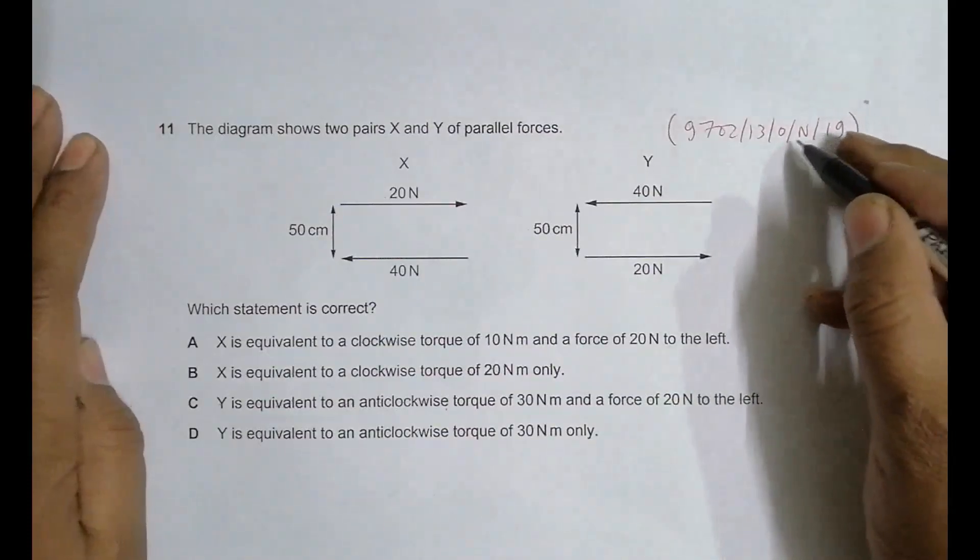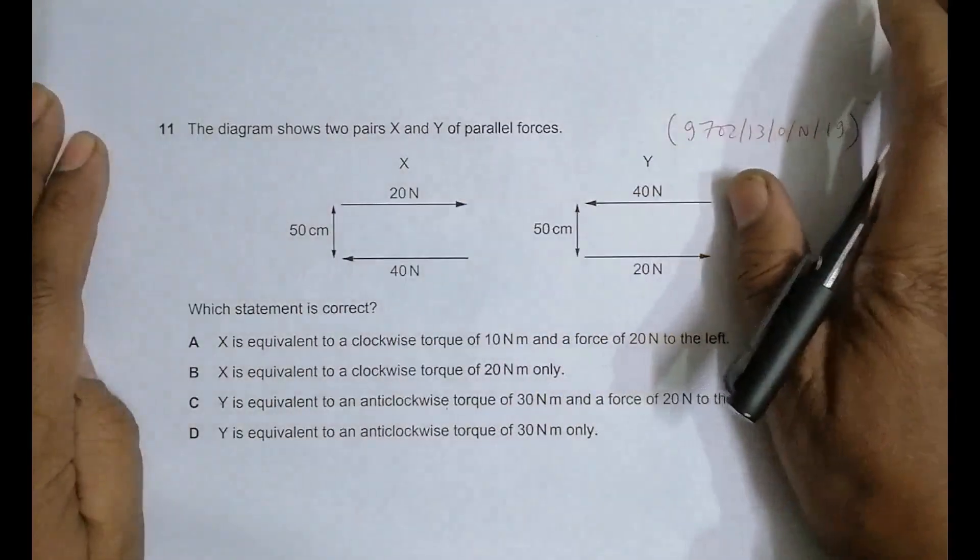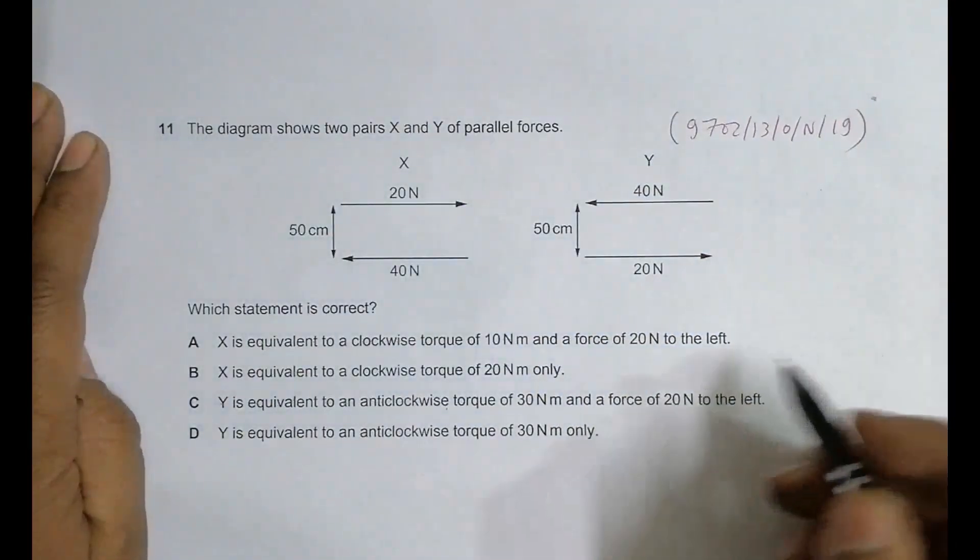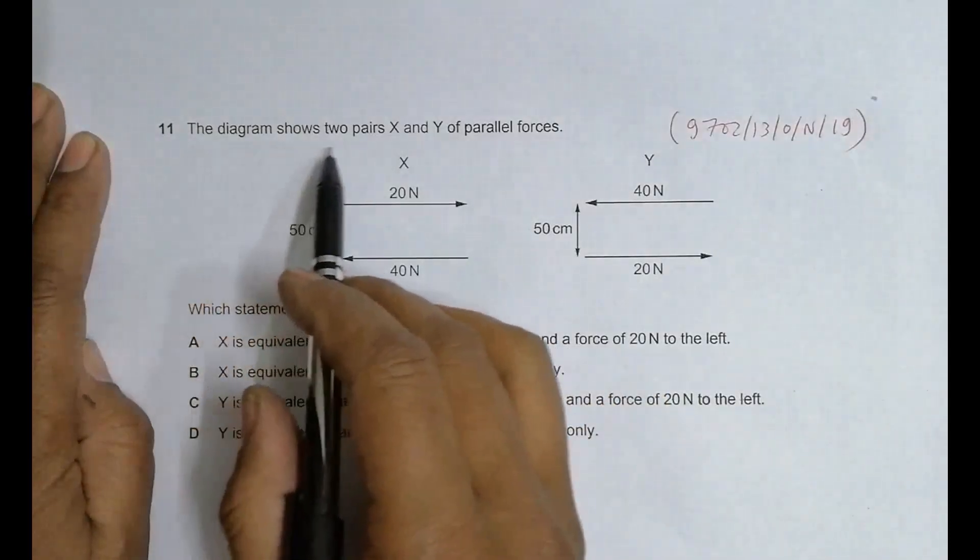Hello folks, this is 2019 October-November Paper 13, question number 11. This question is from the chapter on forces and it deals with torque or moment. It says that the diagram shows two pairs, X and Y, of parallel forces.